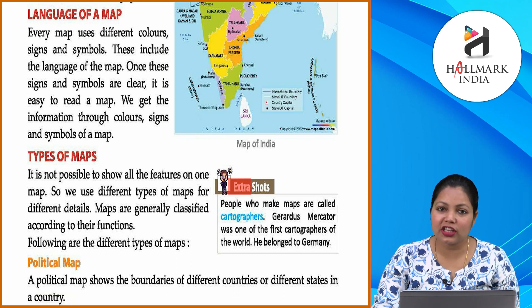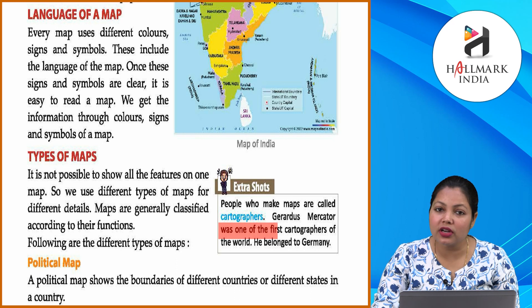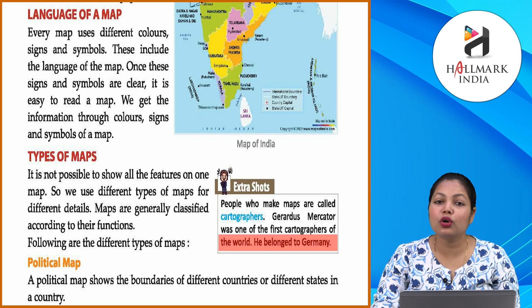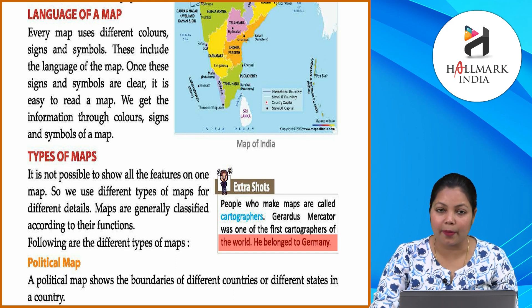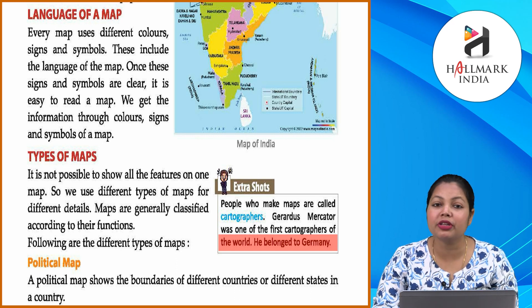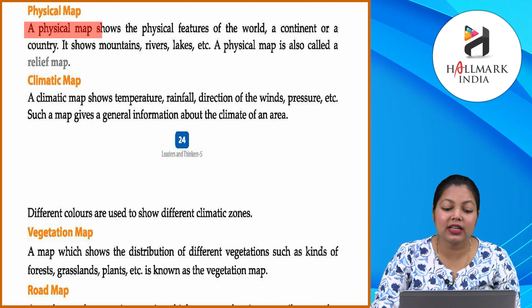Extra shots: People who make maps are called cartographers. Gerardus Mercator was one of the first cartographers of the world. He belonged to Germany. Jo log map banate hain unhe hum cartographers kehte hain. Aur jo pehle cartographer the, unka naam tha Gerardus Mercator — yeh Germany se belong karte the.